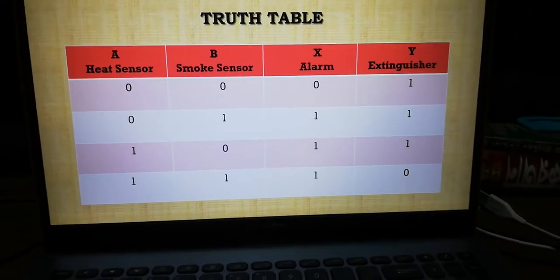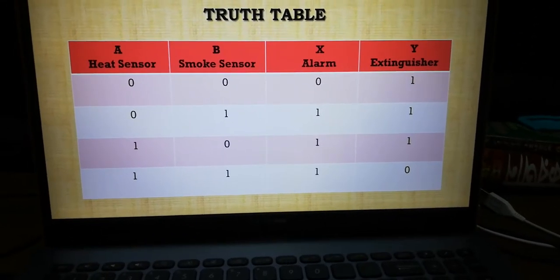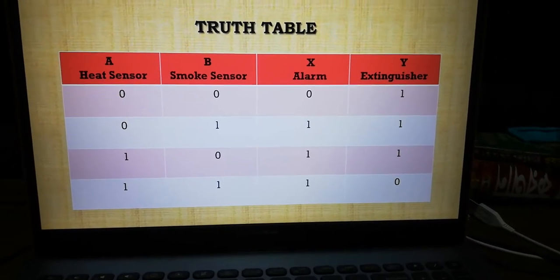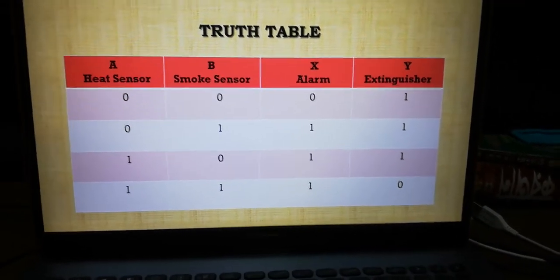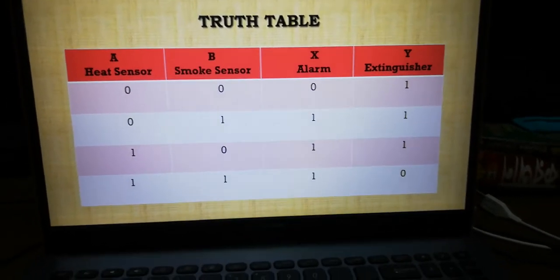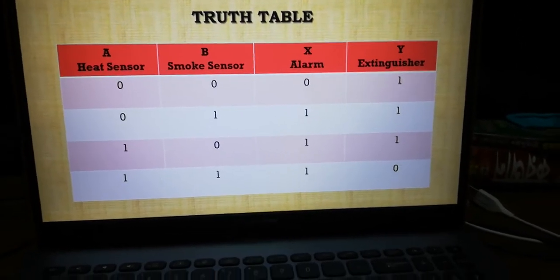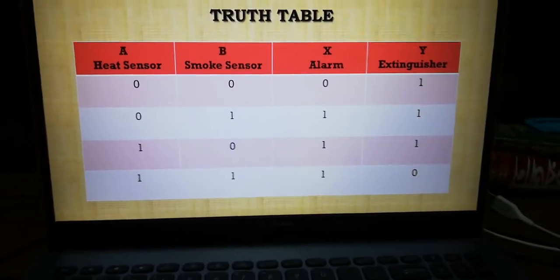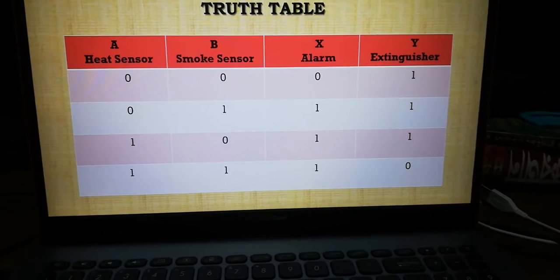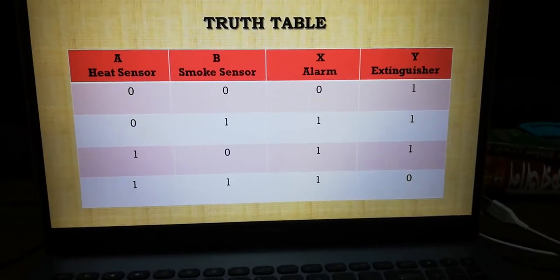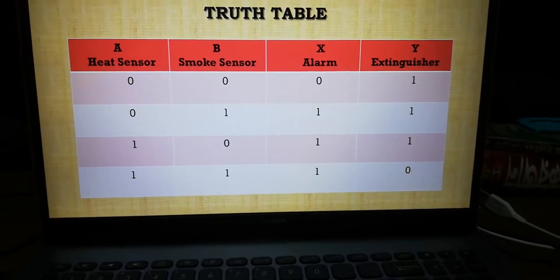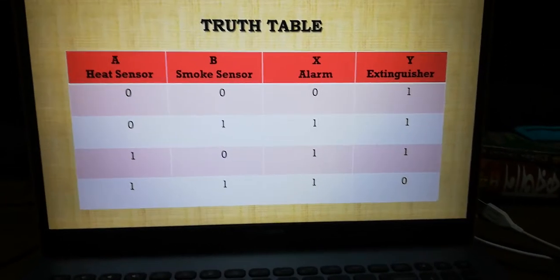When heat sensor is one and smoke sensor is zero, then again the same result - X is equal to one, meaning red is one, and Y is equal to zero, meaning green light is off. That means current is off. Let's see the simulation.